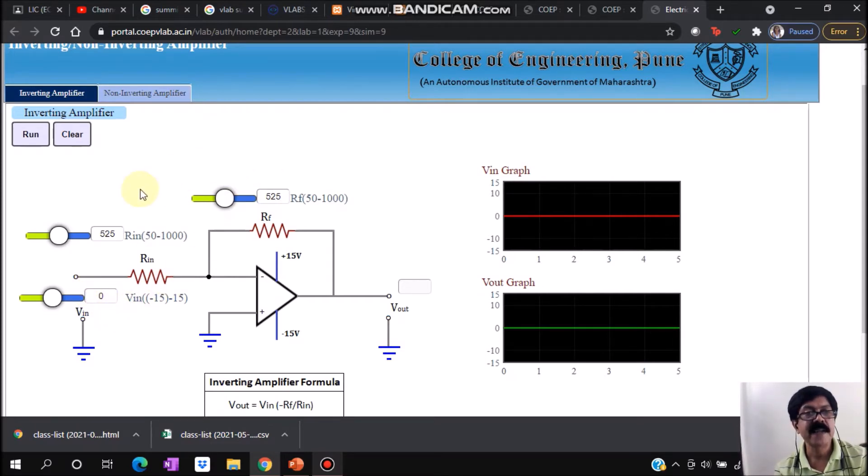We'll have to select certain values and accordingly we will see the simulation. Let us select Rf. I am selecting as 500. R1 I am selecting as 500, so -Rf upon R1 will have the gain of -1 only. Let's say I am selecting this input as 1 volt and now I am just saying Run.